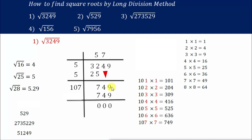Subtract 749 minus 749 and you get 0. So the root of 3249 is 57. If you had to continue the problem, you would add 7 here and continue, but since the remainder is 0, that is the end. So the square root of 3249 is 57.